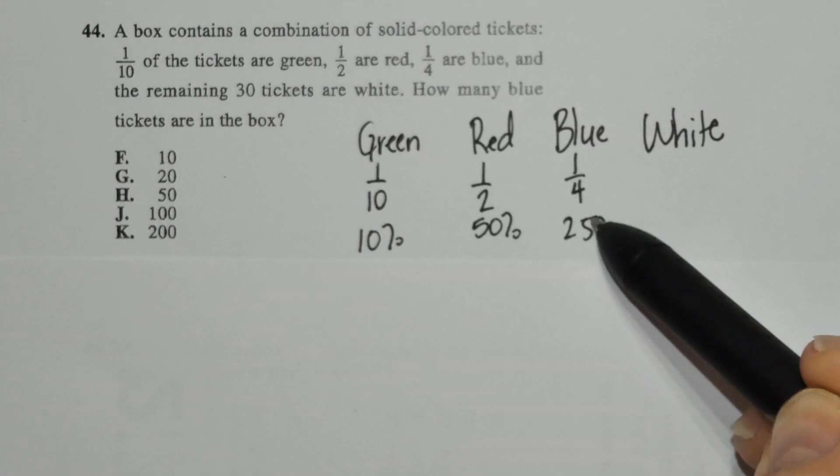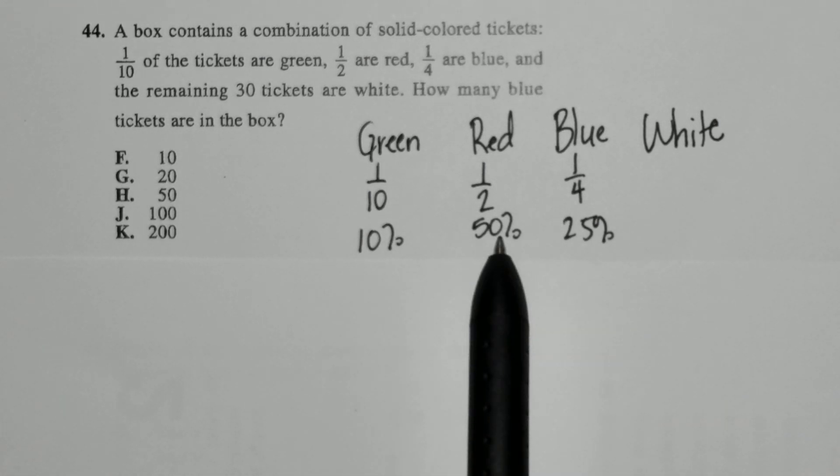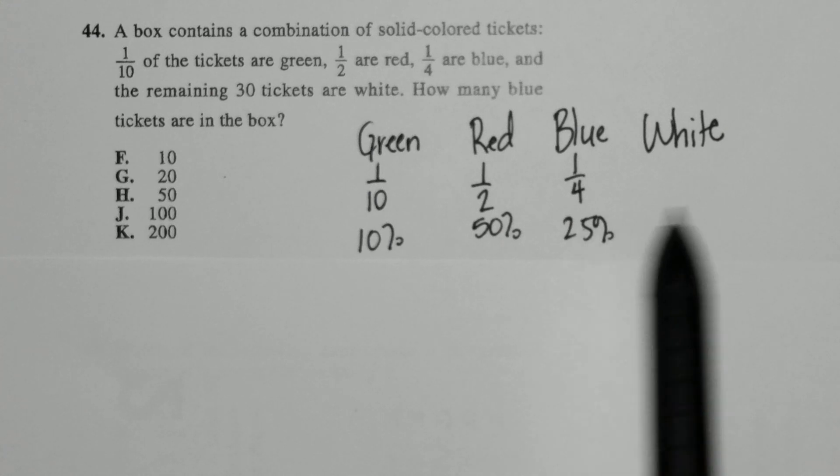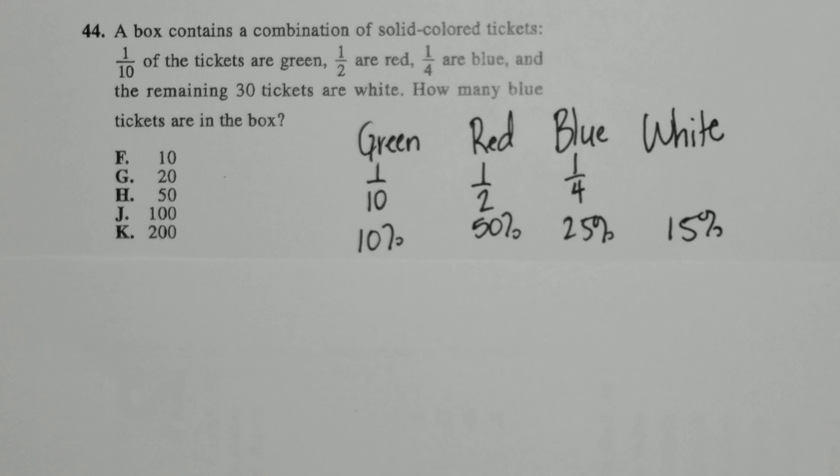1 fourth, it states are blue. I turn it into a percentage. I know they need to add up to 100%. This adds up to 60. I'm at 85. 85 plus what percent equals 100? So 15% of the tickets are white.